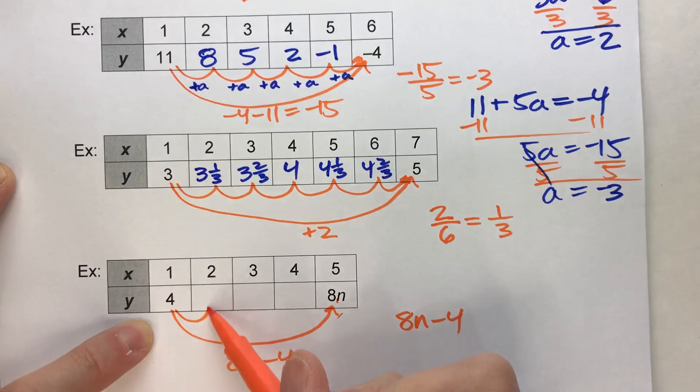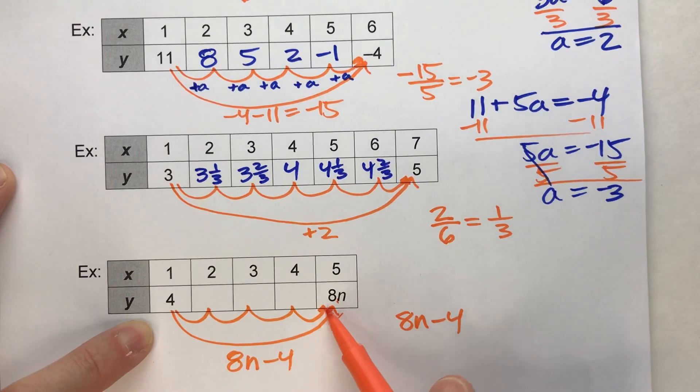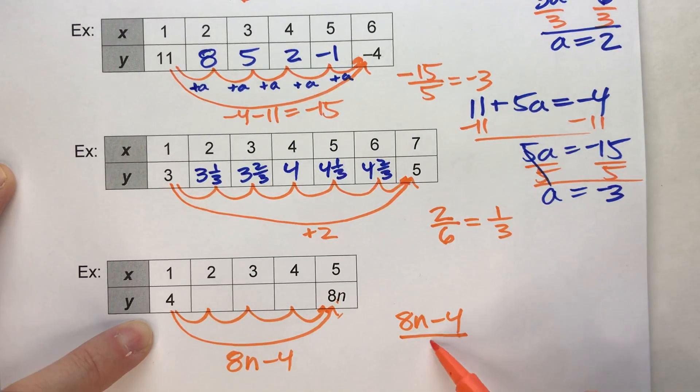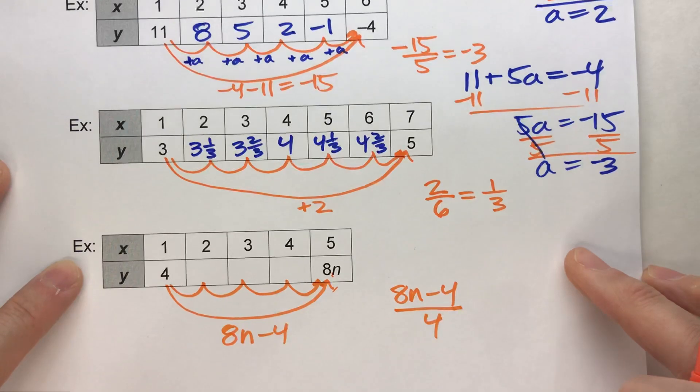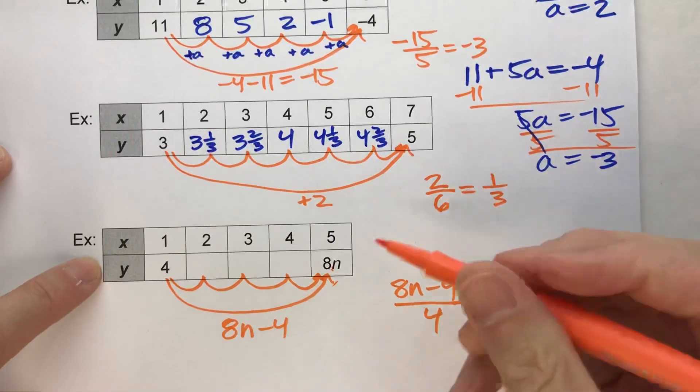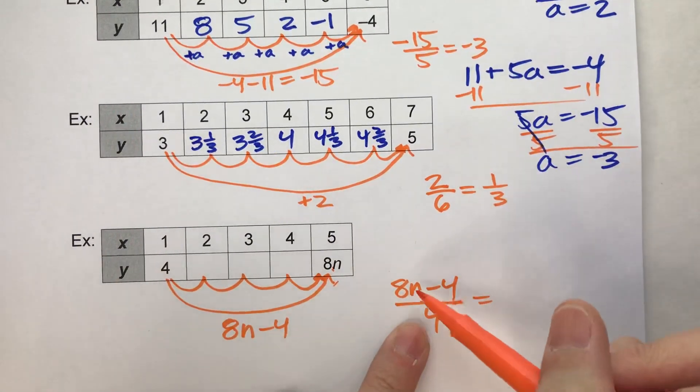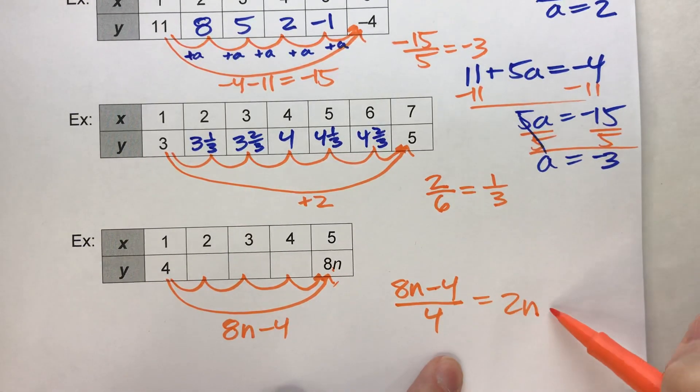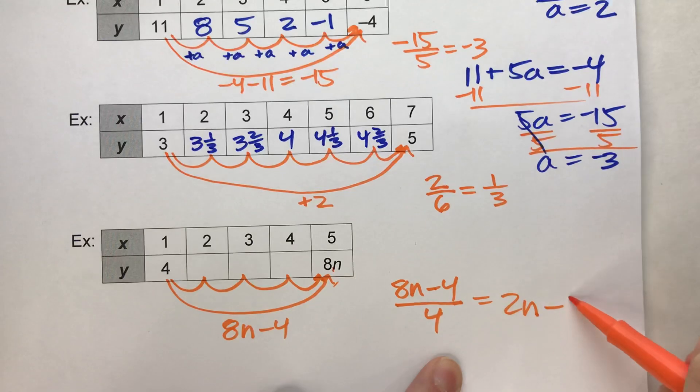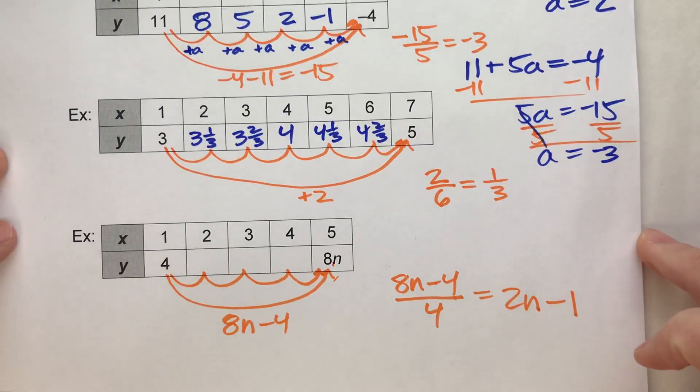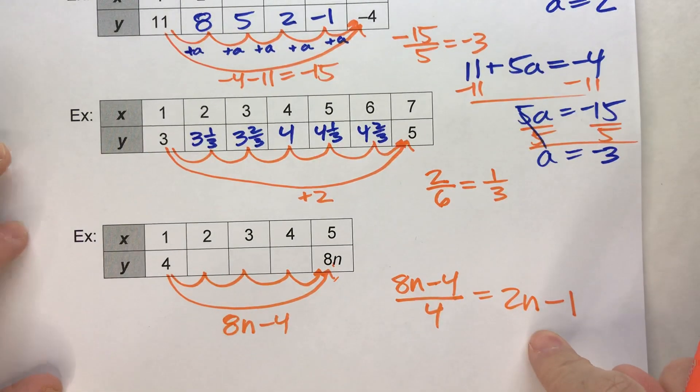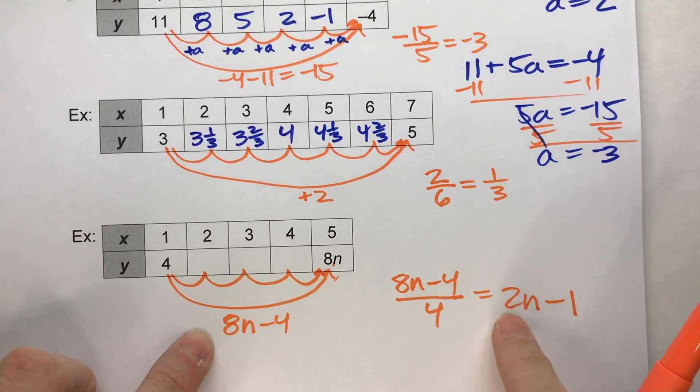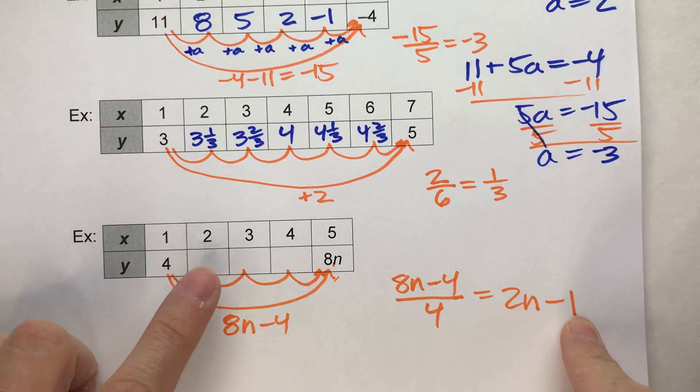But it did that over 1, 2, 3, 4 steps. So, we're going to take this and divide it by 4. Let's see what we get. 8n divided by 4 is 2n minus 4 divided by 4 is 1. So, I get 2n minus 1. What that tells me is, this sequence is going to add 2n minus 1 every single time.